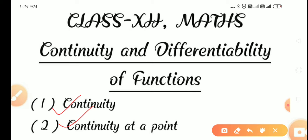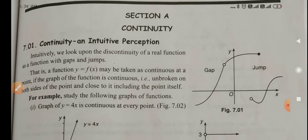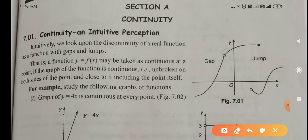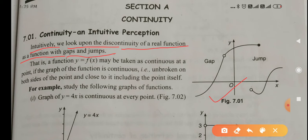Through graphs, you will understand what are continuous functions. Intuitively, if we look at the discontinuity of a real function as a function with gaps and jumps — suppose the given function is discontinuous. So in the graph of that function, there will be a gap and jump. If in the graph a gap or jump is there, it means that function is a discontinuous function. Try to understand this topic properly.